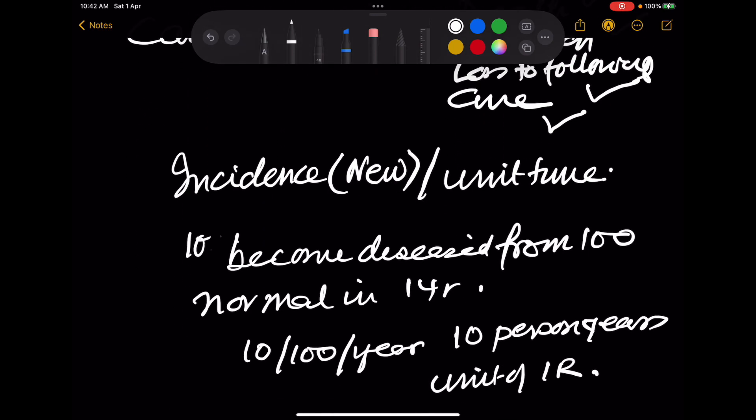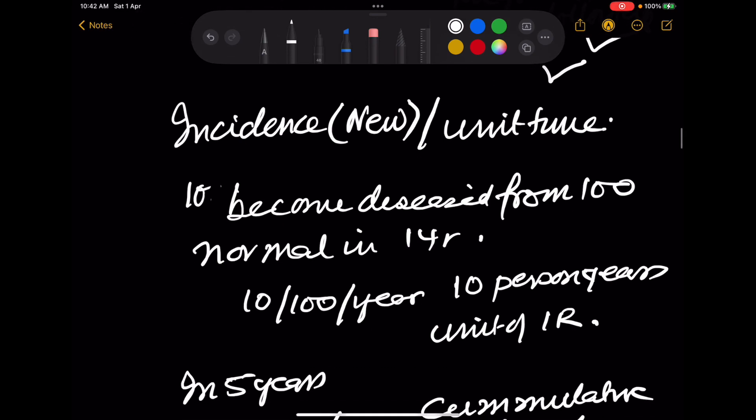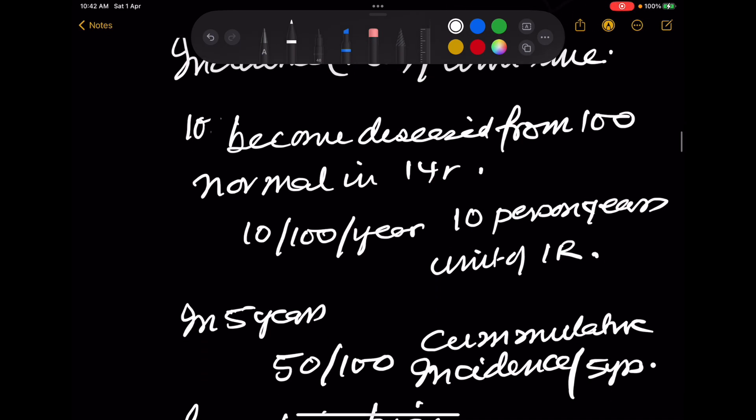Here you understand that incidence is new per unit time: 10, 1, 2 per unit time. So 10 would become diseased from 100 normal in one year. So 10 upon 100 per year is 10% per year, is the incidence rate.